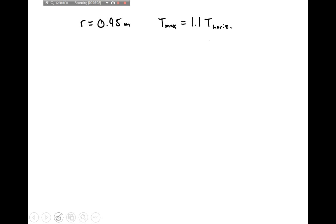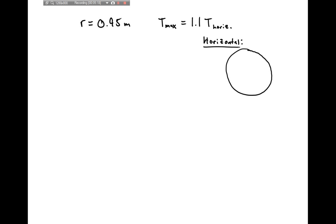First, I want to consider the object as it travels in a horizontal circular path. In this case, the only force being exerted on the object is the tension, which points inwards towards the center of the circle. So the horizontal tension is equal to mv²/r.